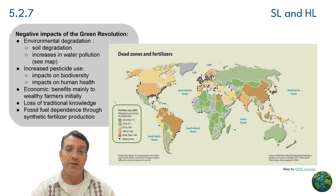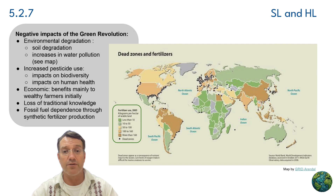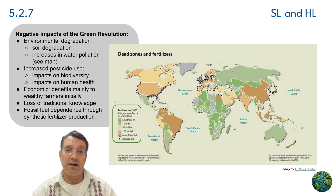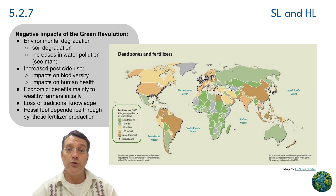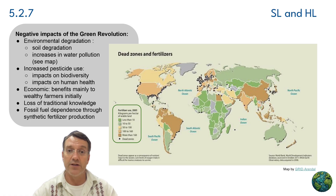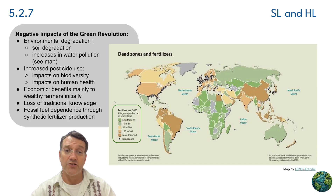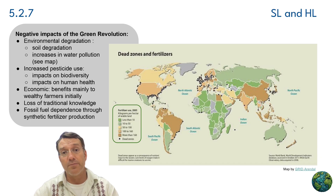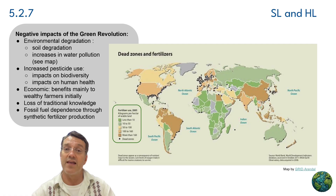However, the Green Revolution created serious environmental problems. This map shows dead zones and fertilizer use patterns, areas where excess nutrients from synthetic fertilizers have created water pollution and ecosystem damage. You should be able to connect that to eutrophication from topic four, water. The Green Revolution also increased pesticide use, impacting both biodiversity and human health. Economically, benefits mainly went to wealthy farmers at first, and that widened inequality. There was also a loss of traditional agricultural knowledge and an increased dependence on fossil fuels through synthetic fertilizer production.